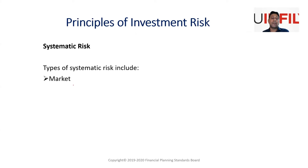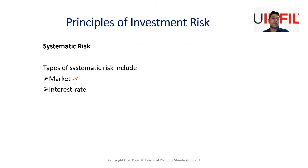The first type of systematic risk is market risk. If the overall market goes down, you will definitely take a hit on your portfolio regardless of how much diversification you have. The second is interest rate risk, which is particularly relevant to debt portfolios.